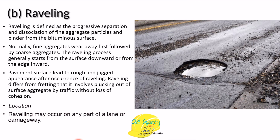Raveling can be concentrated in a certain section of the carriageway or occur throughout its length and width. Raveling is the removal of fine particles followed by the removal of coarse particles from the surface course. You may confuse it with stripping: in stripping there is complete removal of the bitumen layer from the surface of the aggregate, while in raveling the aggregate particles are coming out - the bitumen coating might still be present on the aggregates, but the aggregate particles are coming out of the mix.